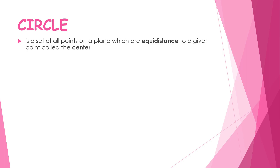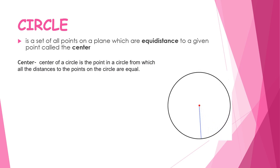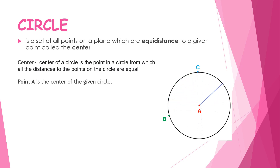The center of a circle is the point from which all distances to the points on the circle are equal. Let's have this circle with center point A, and points B and C on the circle. By definition, the distance between A and B and the distance between A and C are the same.